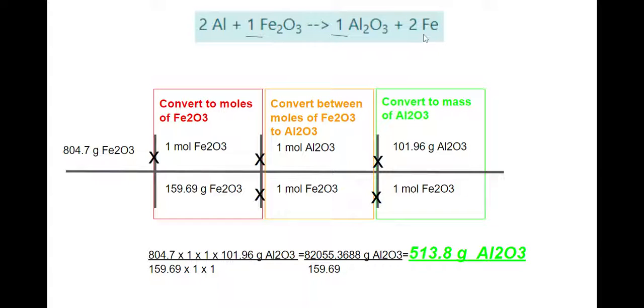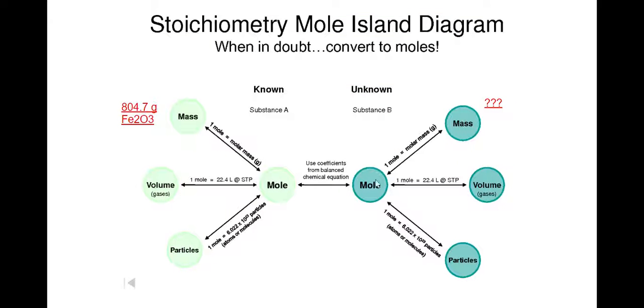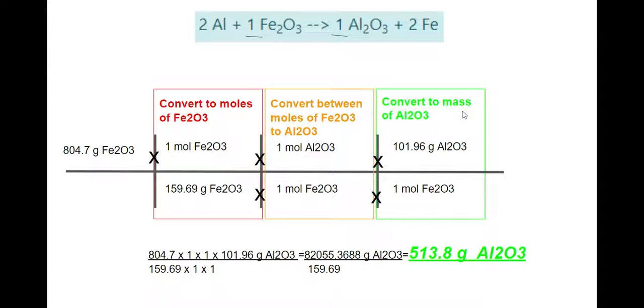Now, if it had asked to figure out the mass of iron produced, then you would have two moles of iron here instead of the one mole Al2O3. But you're lucky, and you just have the one here. And then, for the diagram, we're in moles. Now, we want to go to mass.